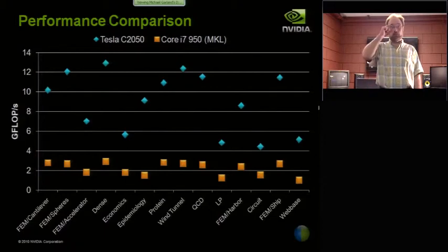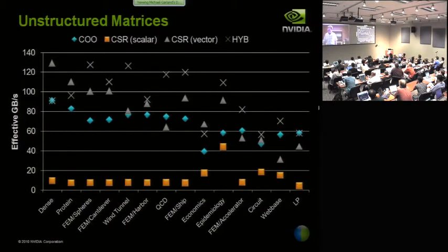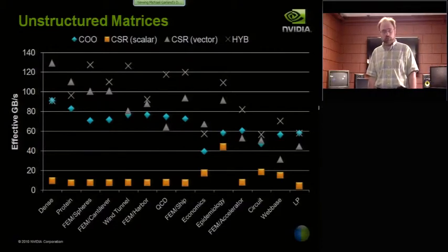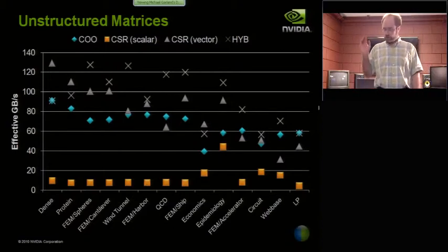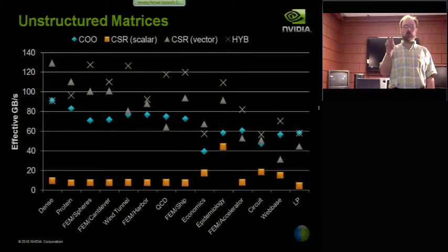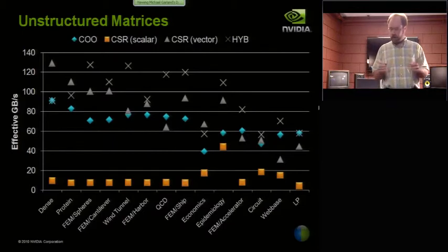NCSA has a question. In slide number 30, I noticed a CSR performance bump. Maybe you can explain that. Yeah, this one. The epidemiology. All of them are... I think that there are a lot of rows that are very, very short, I believe, if I remember correctly. So CSR scalar is actually perfect if the stride is one between threads. So if your row length is basically one, or pretty close to one, it's actually reasonable. It's only when you have larger rows that it becomes bad. So in that particular one, there are a lot of very short rows.